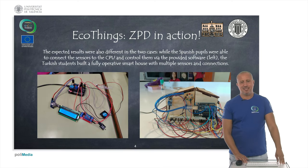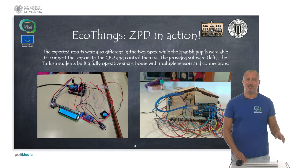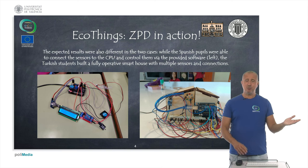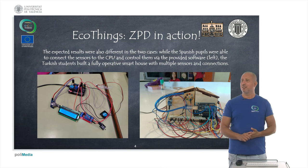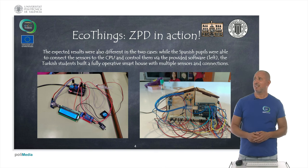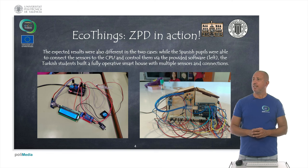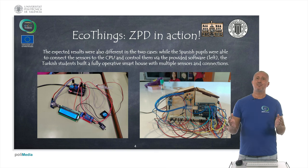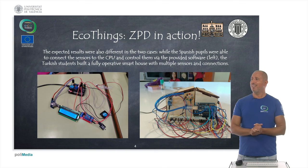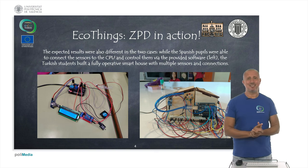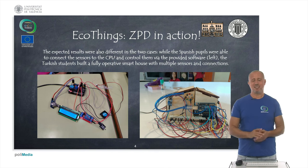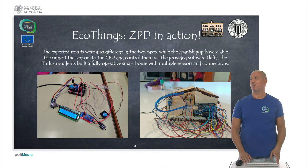Of course, the challenges were different in both countries. In Spain, a primary school, the goals were to connect the sensors to the CPU and control the sensors up to a certain point. The picture on the right shows a fully operative smart house with plenty of sensors and a motherboard, even powered by solar panels — and this is what the Turkish students managed to do during the ecotechnology courses.